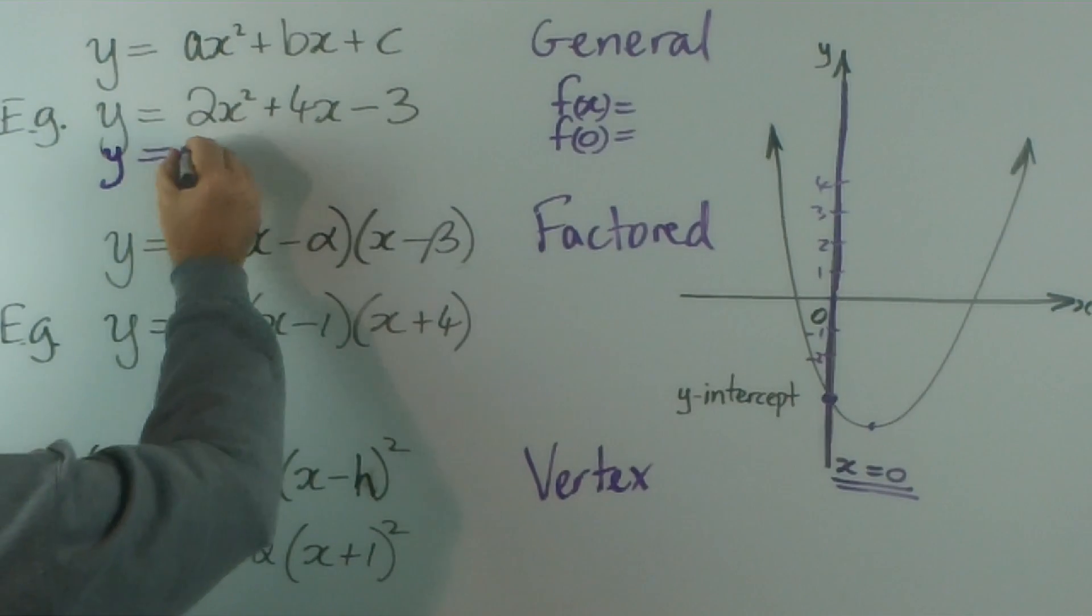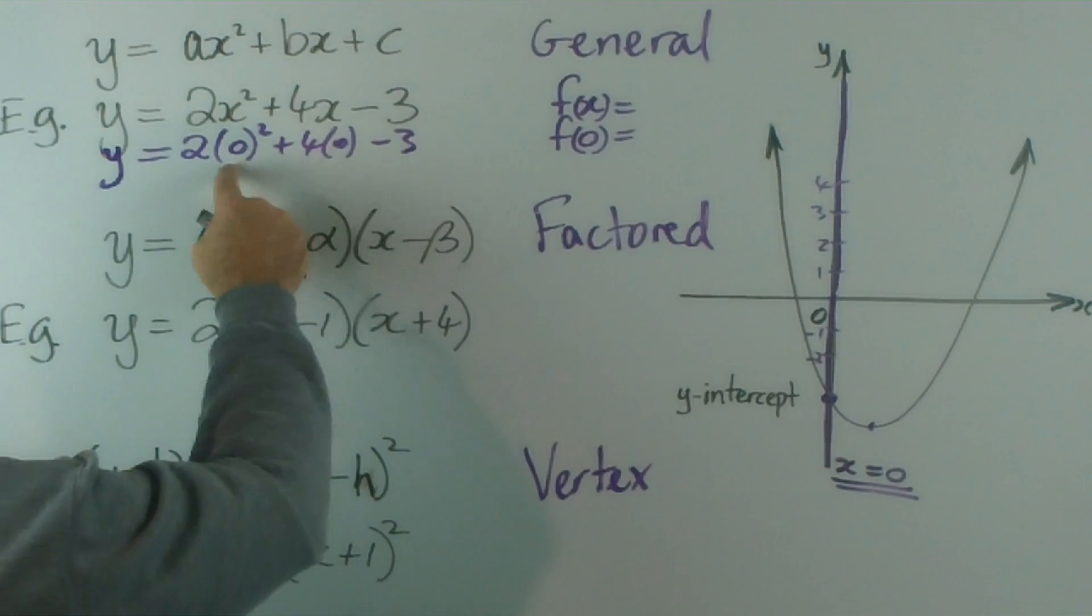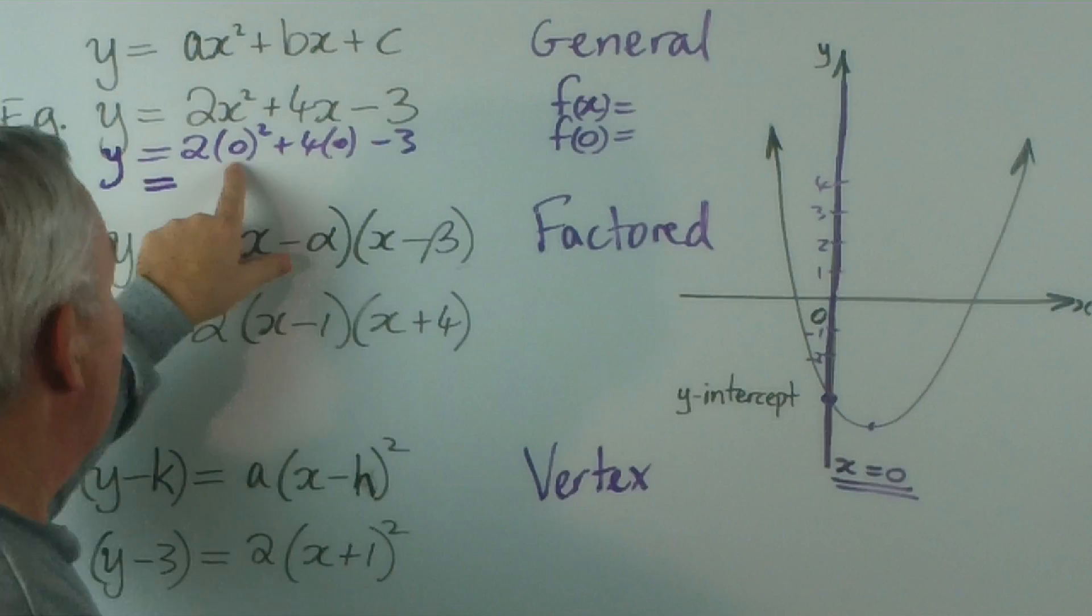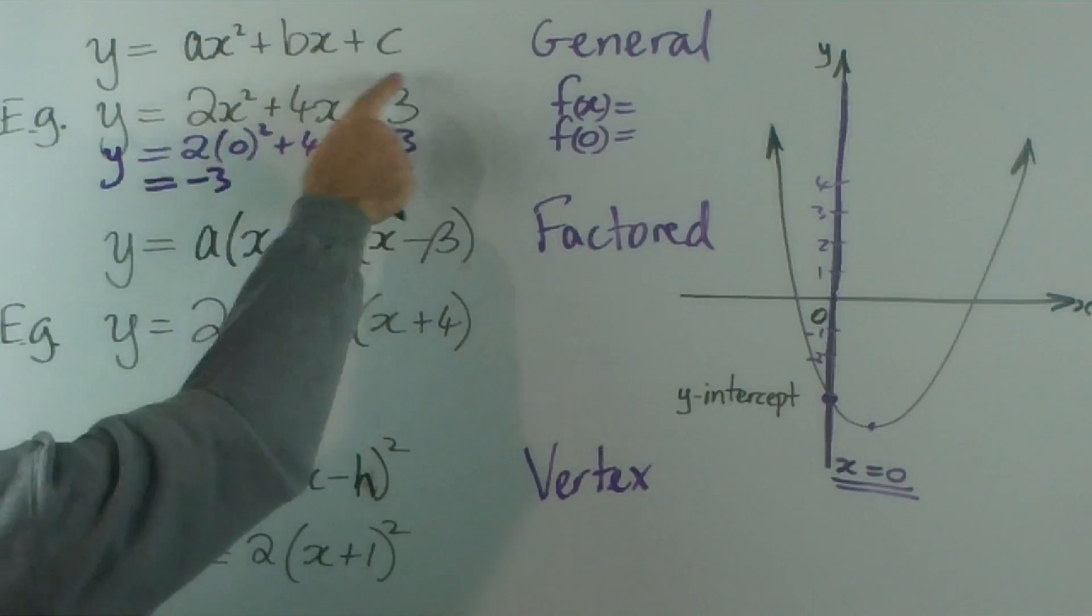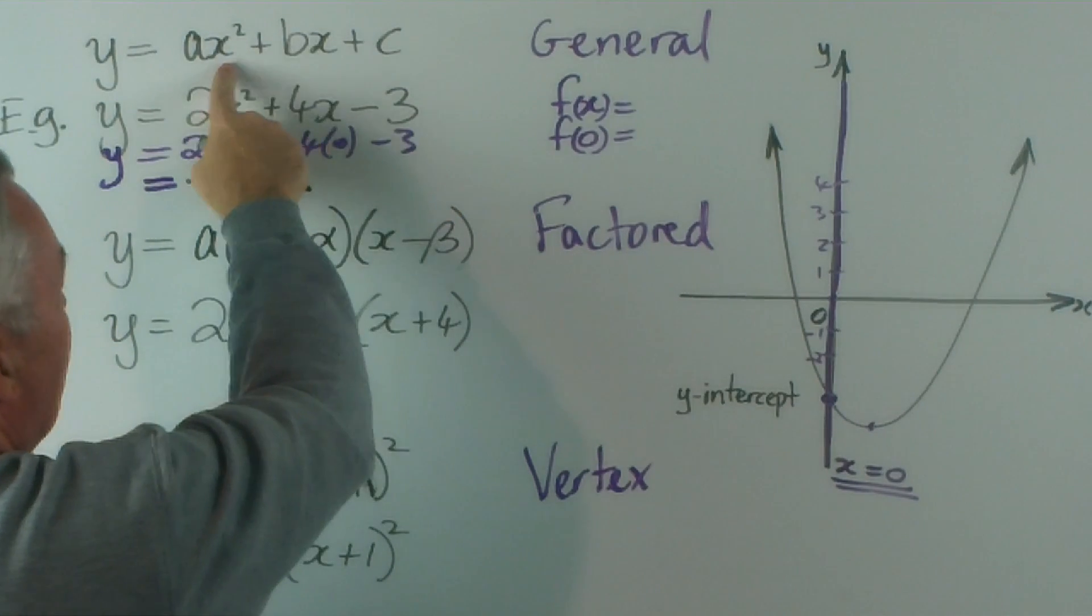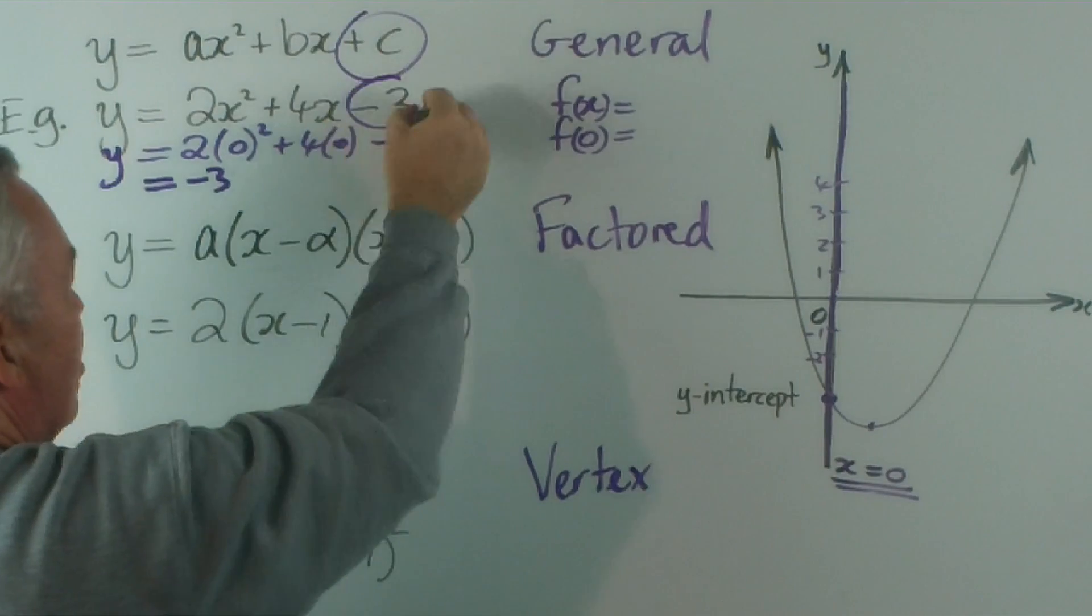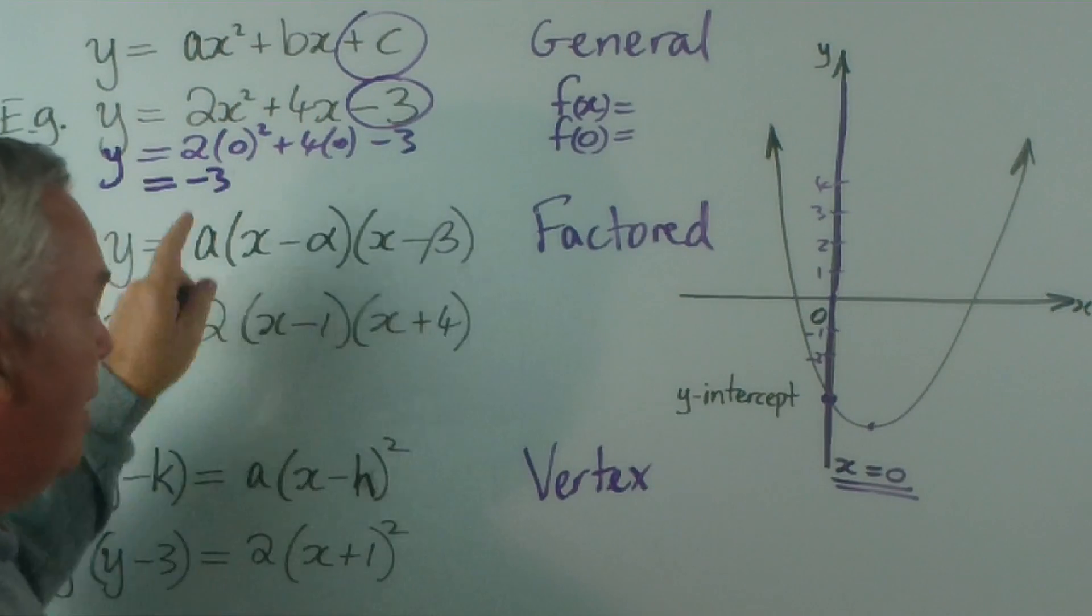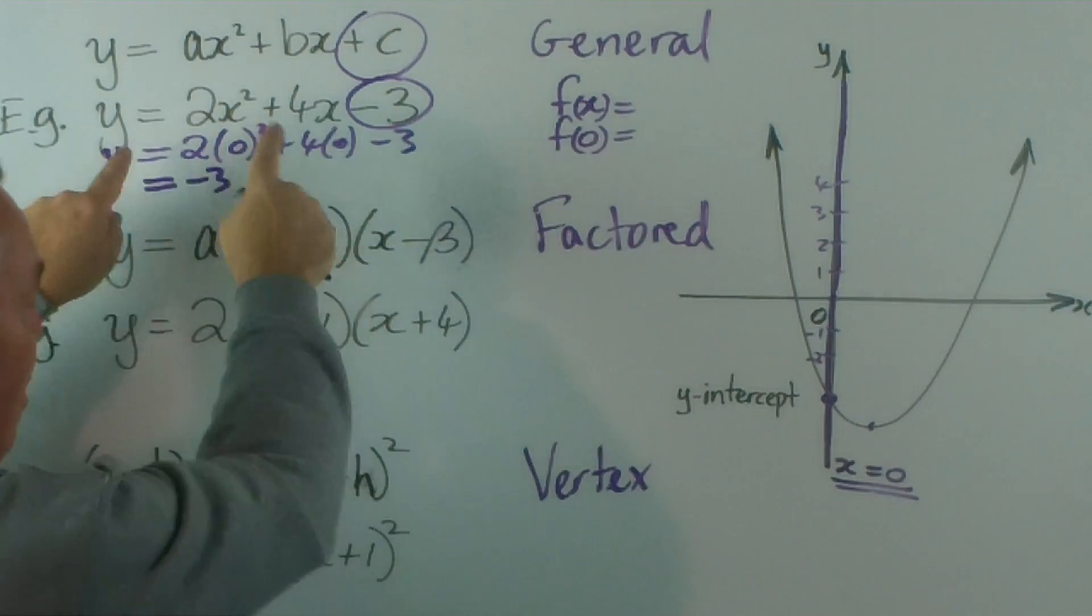Then I'd write: y = 2(0)² + 4(0) - 3, because we're substituting zero in place of the x's. Multiplying anything by zero is zero, so these two terms disappear totally, and y = -3 is the intercept. You should see quite clearly that in the general form, where we have x² and x terms, these will both disappear when x equals zero. So the last term is our y-intercept. This particular form is my favourite for finding the y-intercept.